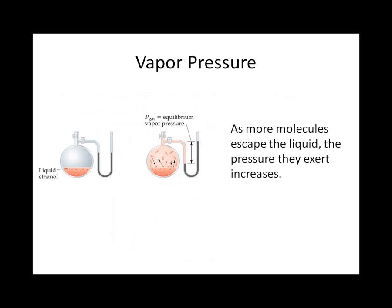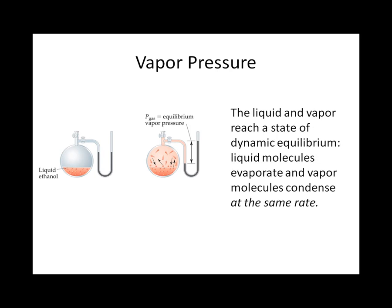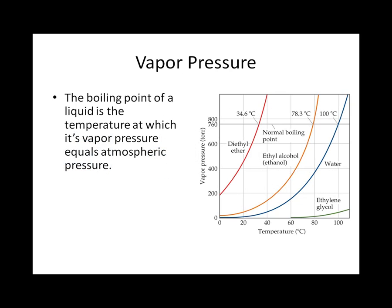For each different liquid, the temperature at which their vapor pressures reach atmospheric pressure is different. This is due to the amount of intermolecular attractions present within the liquid. Diethyl ether, shown in red, reaches a vapor pressure of 760 torr at 34.6 degrees Celsius, whereas ethanol does not reach this point until 78.3 degrees Celsius. Thanks for watching this video on phase changes and vapor pressure. If you are still not clear on the concepts, you should replay this video. This is Dr. White, signing off.